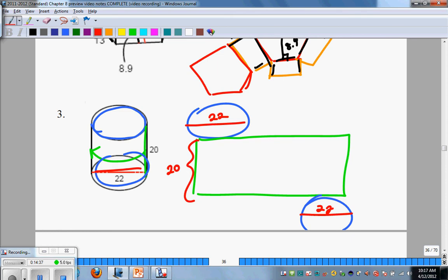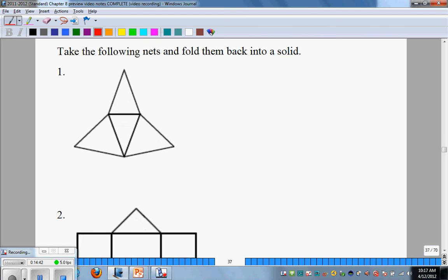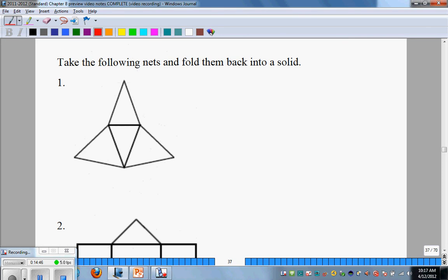Now we're going to work backwards. What I'd like you to do is take these three nets - one, two, and three - and fold them back into solids. I'd like you to attempt to do that on your own and then restart the video.